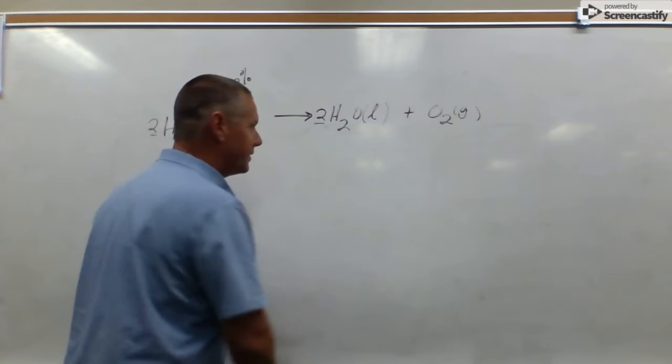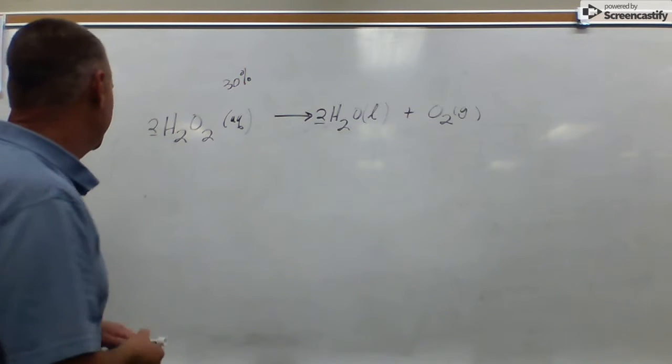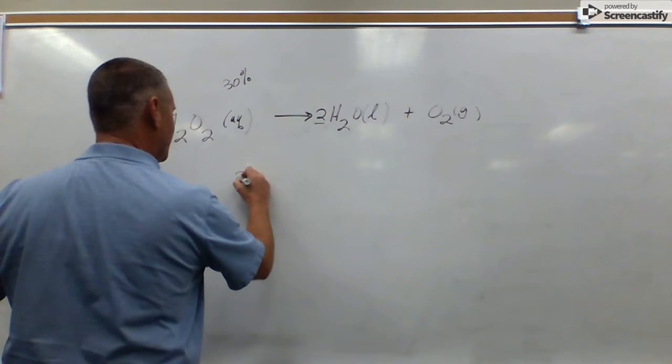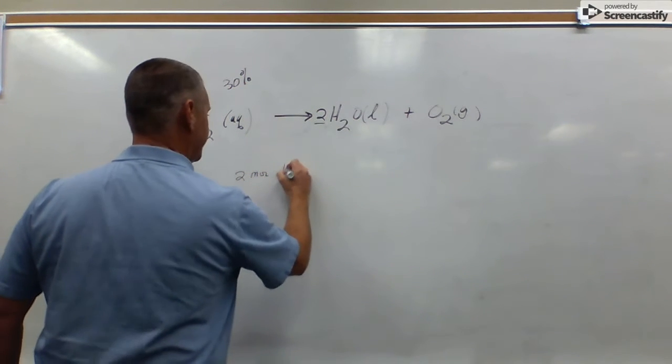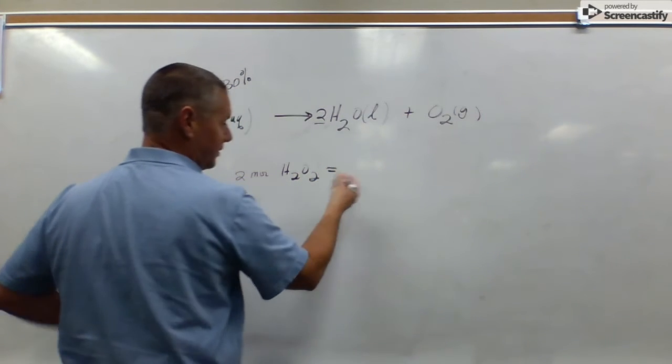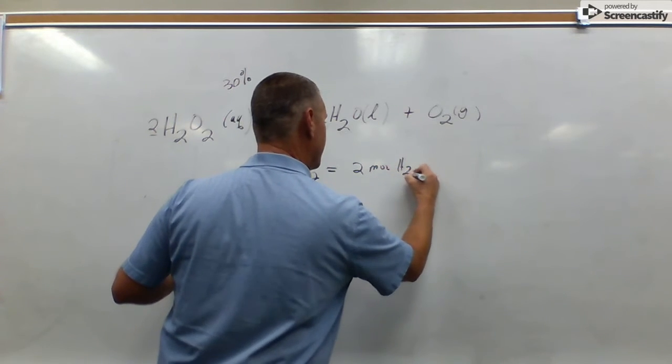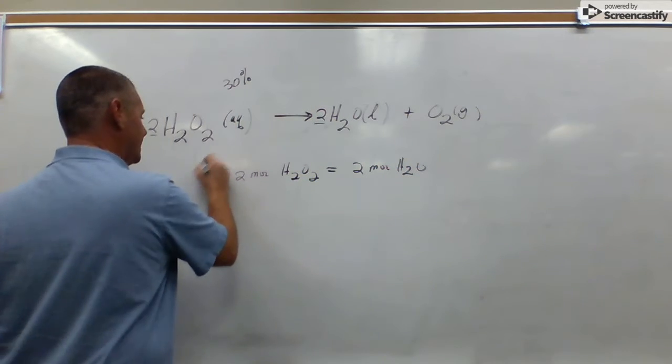Okay, so on to those mole ratios. So the equivalent statement that we would get from here is 2 moles of H2O2 is going to give you, or going to be converted equally to, 2 moles of H2O.